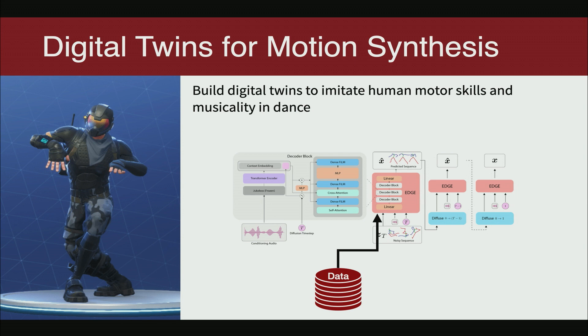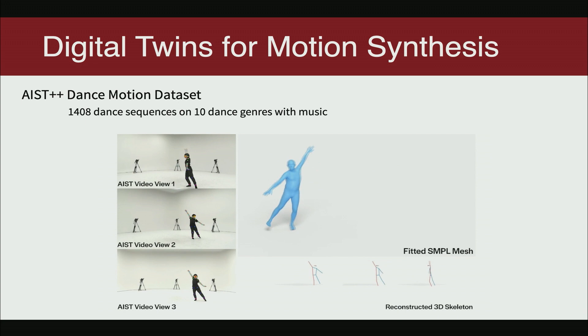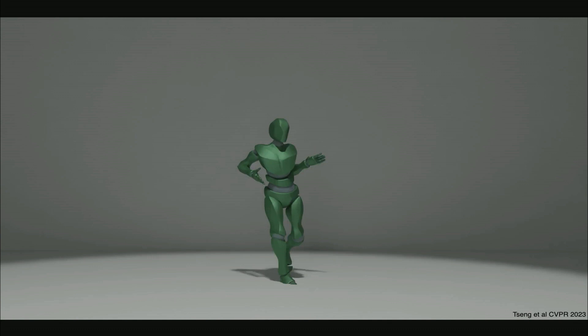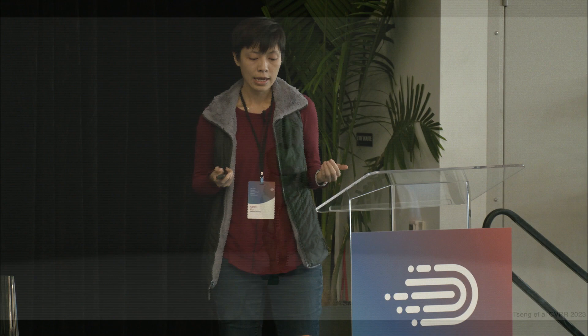The next application is using digital twins for motion synthesis. We build a digital twin to imitate human ability to dance to music. Given a dataset of human dance motion, can we train a digital twin to dance to music with new movements? The answer is yes. If we play new music to this digital twin, it will start dancing with appropriate movements according to the beats and rhythms.